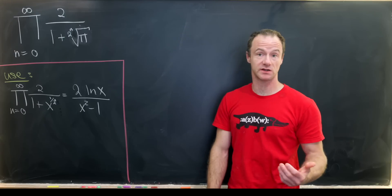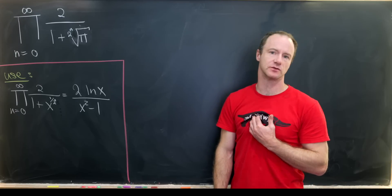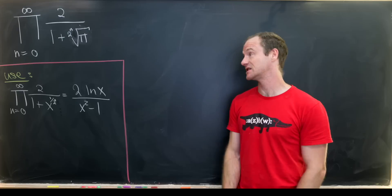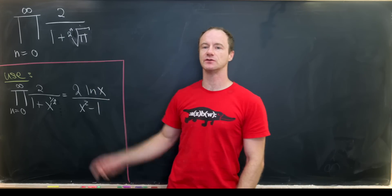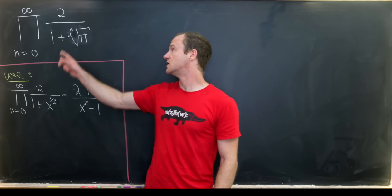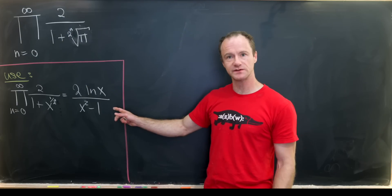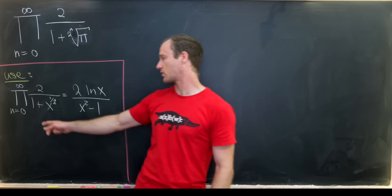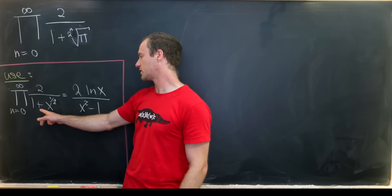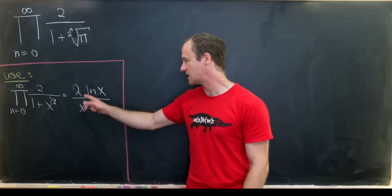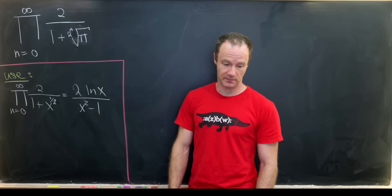I've got a really nice, crazy-looking infinite product to show everyone today, and we're going to tackle this by proving a really powerful tool and then using that tool to do this essentially in one step. Our final goal is to find the product as n goes from zero to infinity of two over one plus the two to the nth root of pi. The tool we'll develop is: the product as n goes from zero to infinity of two over one plus x to the power of one over two to the n equals two times the natural log of x over x squared minus one.